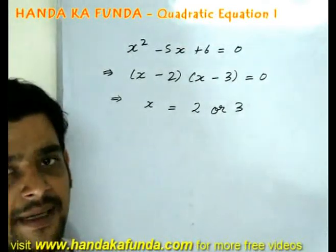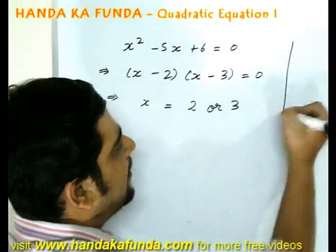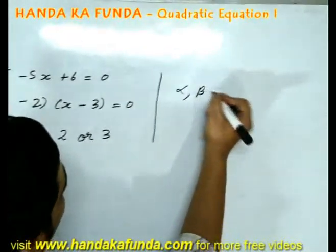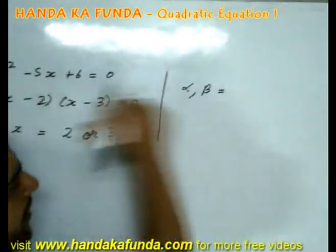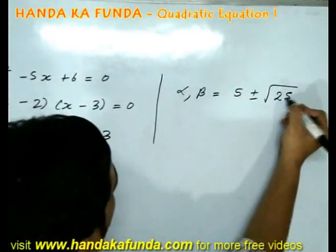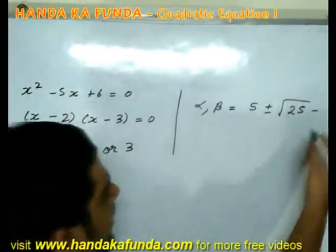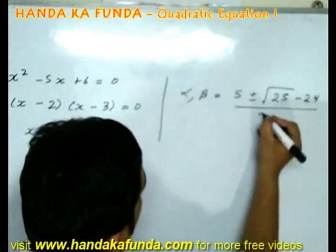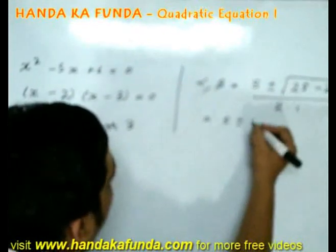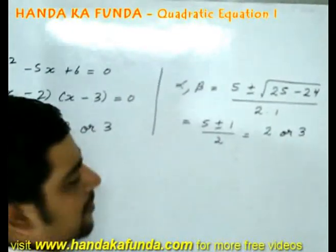I recommend use the factorization method as long as possible. If it is not possible, you can also use the formula. Let's see how will we get the roots from the formula. My roots alpha and beta will be minus b. b in this case is minus 5, so this will become 5 plus minus square root of b square. That is 25 minus 4 into a which is 1 into c which is 6. 4 into 1 into 6 is 24 upon 2a. That is 2 into 1. So this comes out as 5 plus minus square root of 1 or 1 by 2 which means 6 by 2 or 4 by 2 which means 2 or 3.